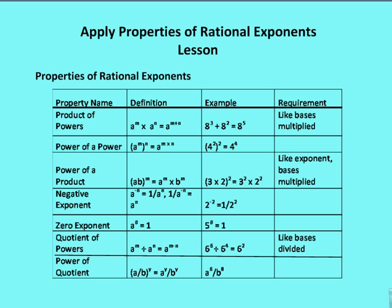Just briefly: product of the powers, power of the powers, power of the product, negative exponent, zero exponent, quotient of powers, and power of the quotient. You should keep this set of information handy when you handle expressions using rational exponents. You could laminate this, write it down, or print it, but remember you should know each of these properties so you can handle rational exponents quickly.